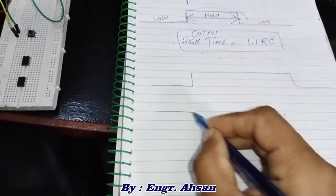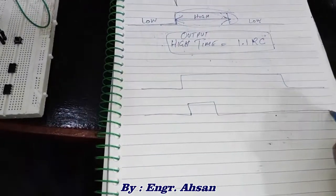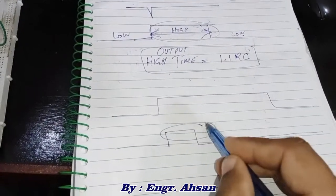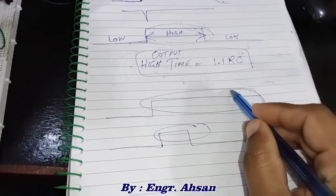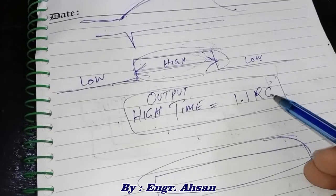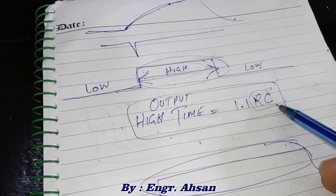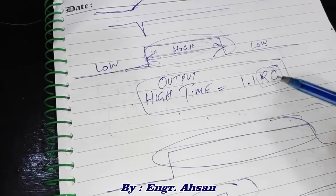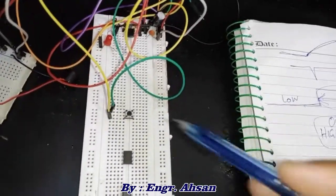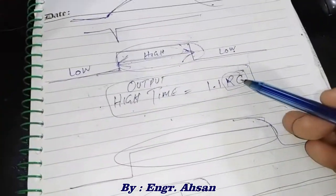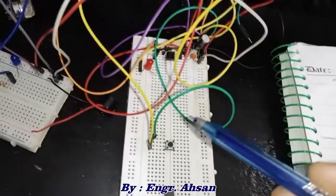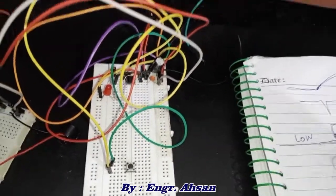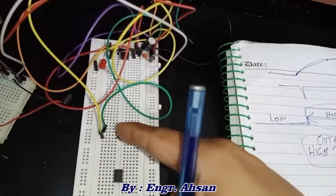You can make this high time very short. This formula decides, and these two values basically determine the behavior. If you have higher values, it remains high for higher time. If you have small values, it remains high for a shorter amount of time.